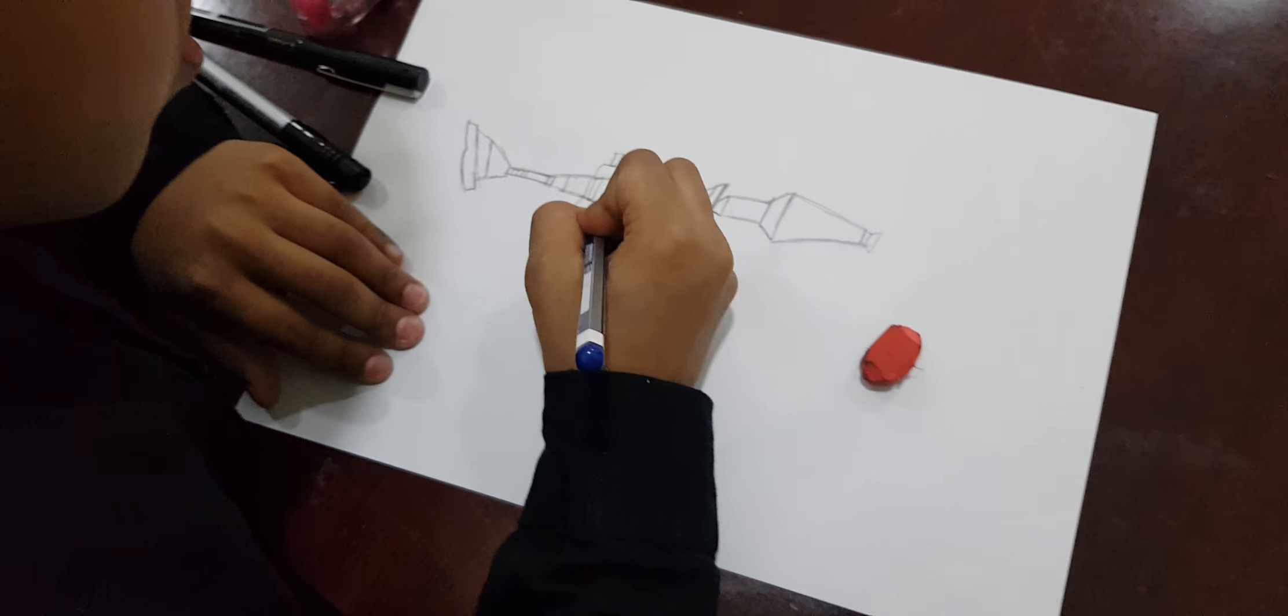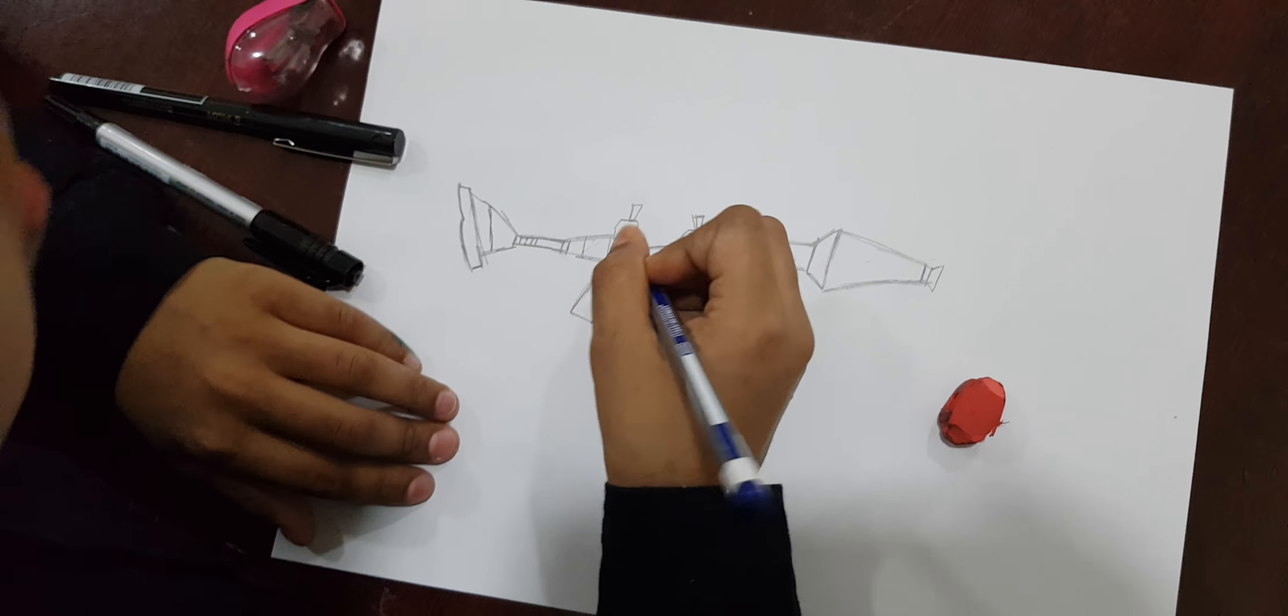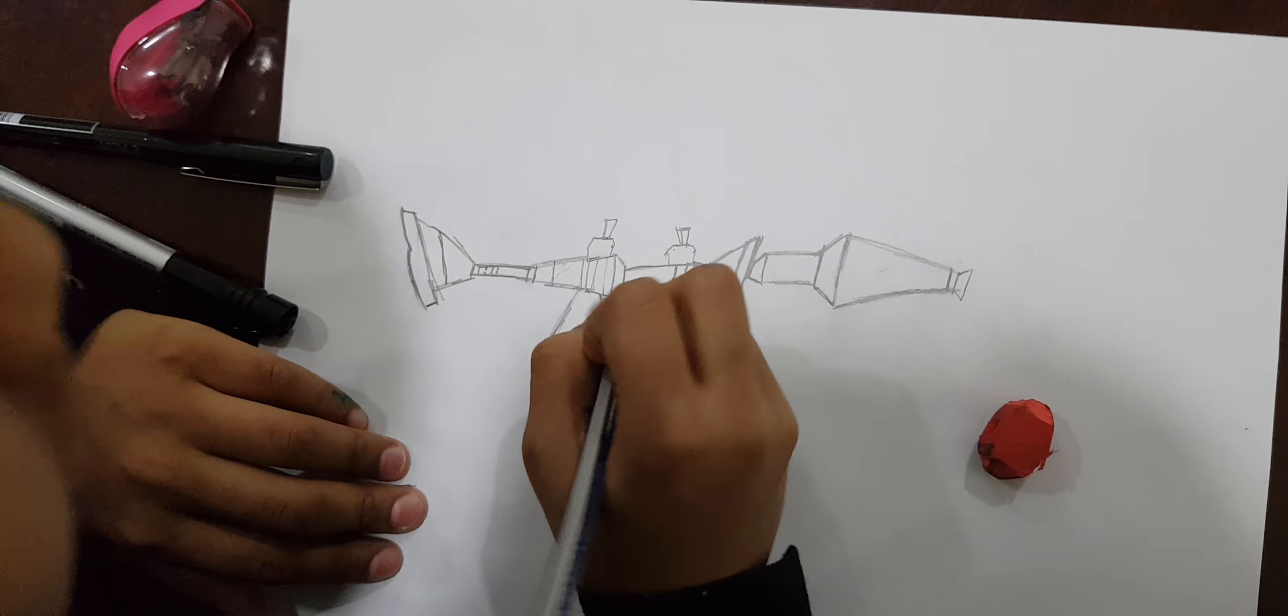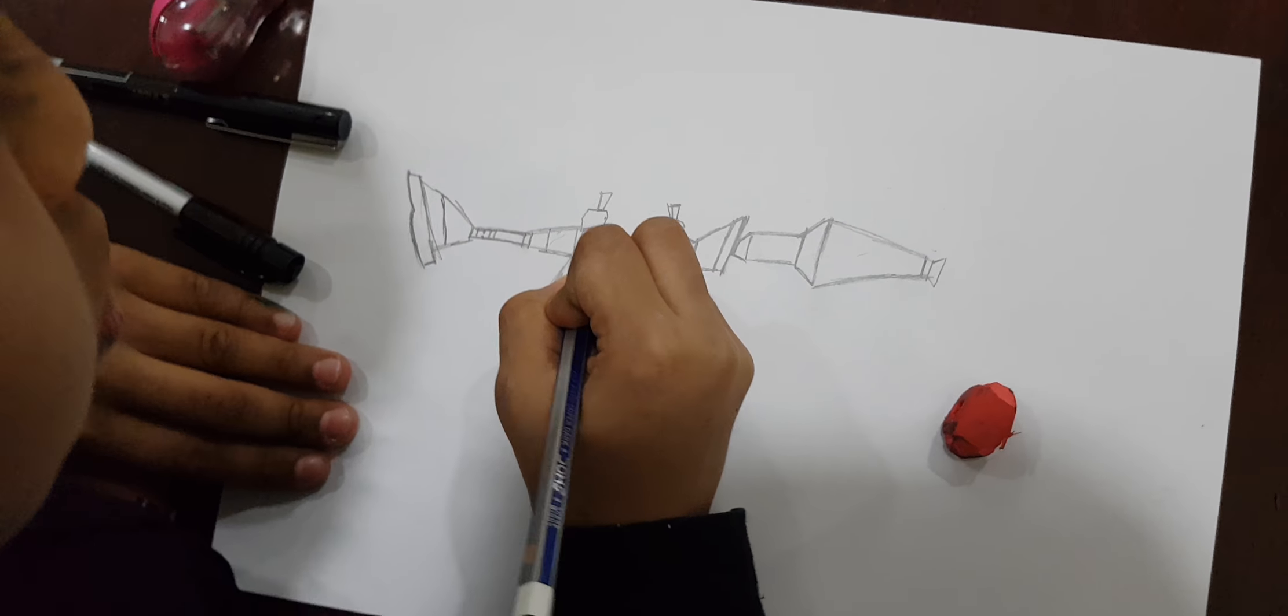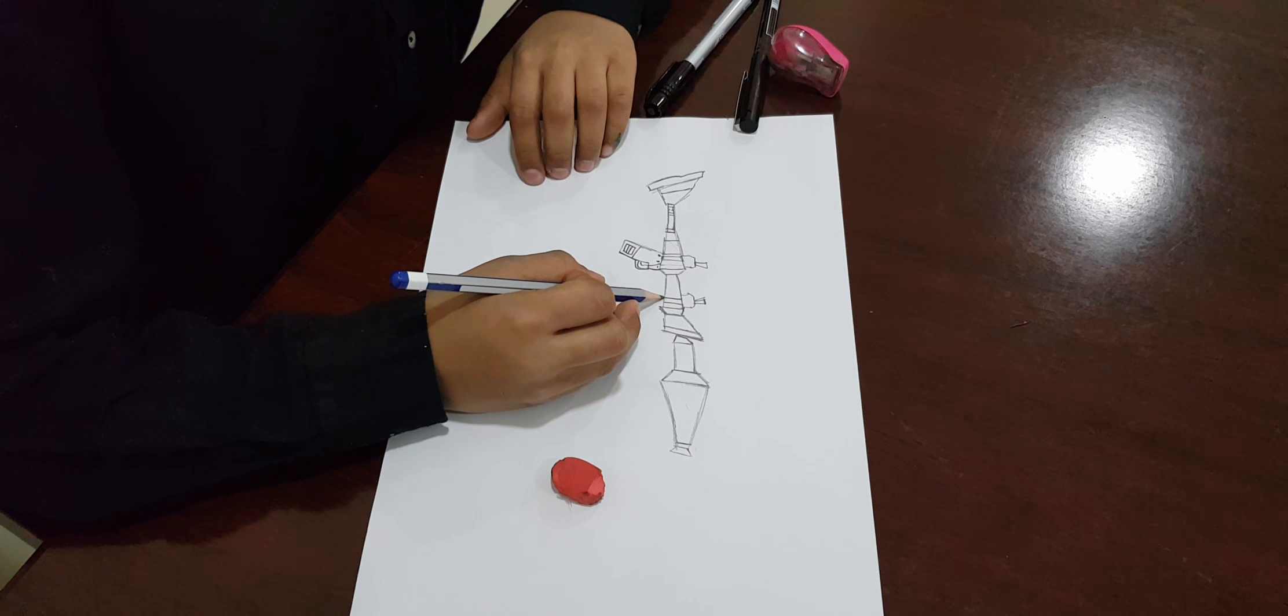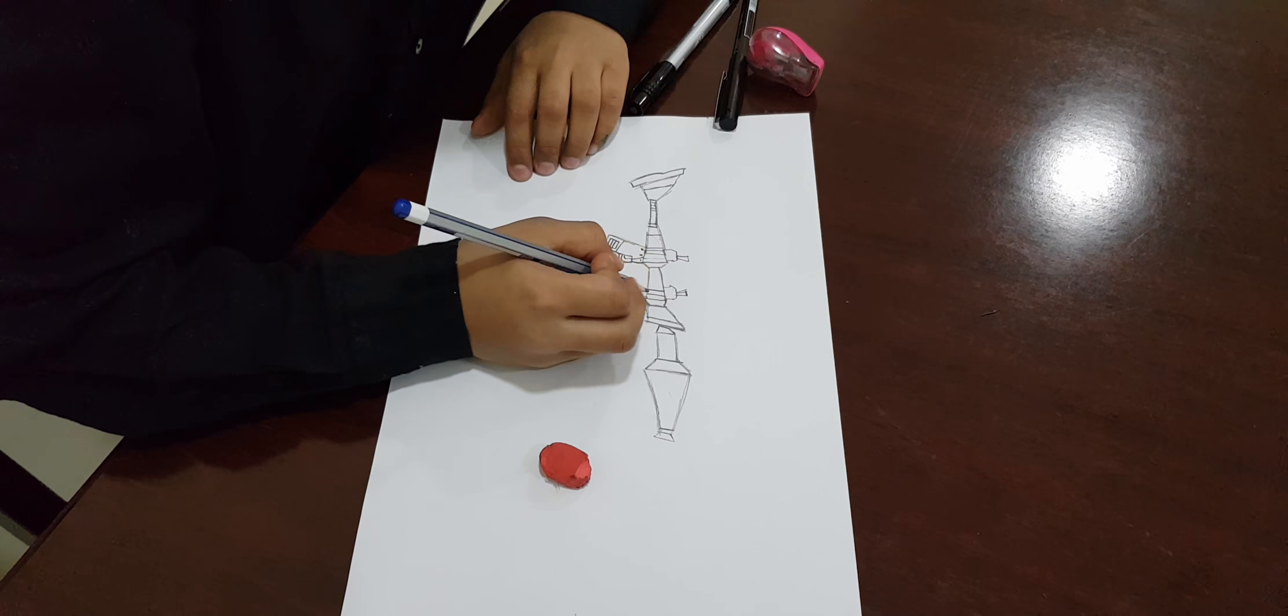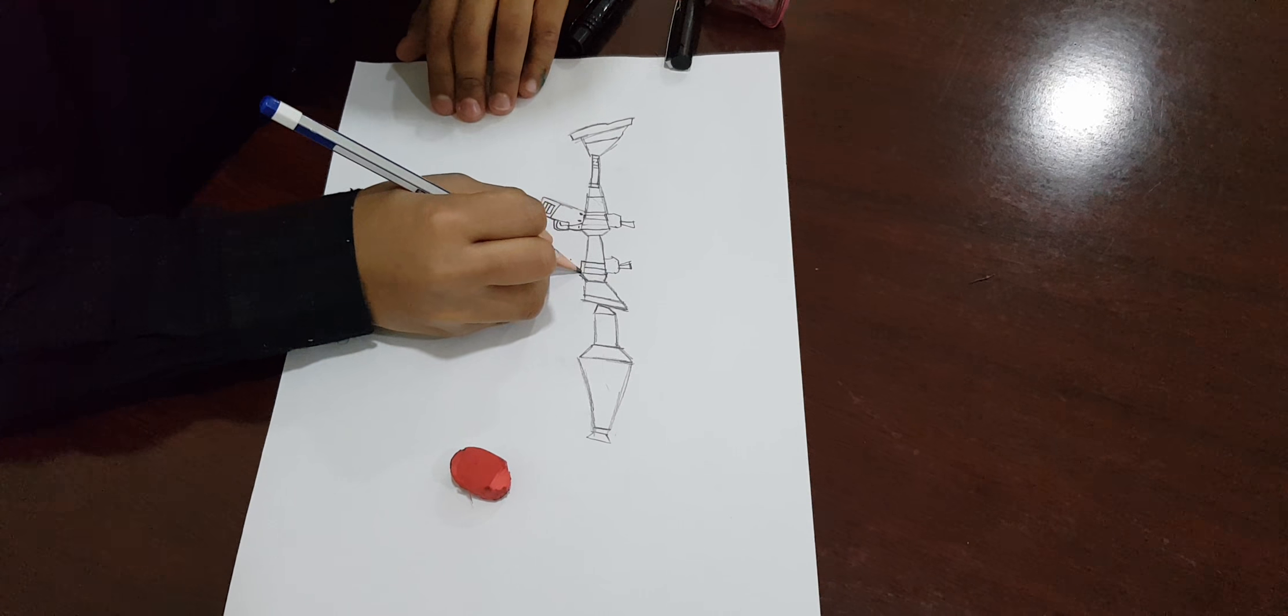That I'll do here. A curve line. Make a small line over here. We have two handles. Now let's go to this part over there. Connect like that.